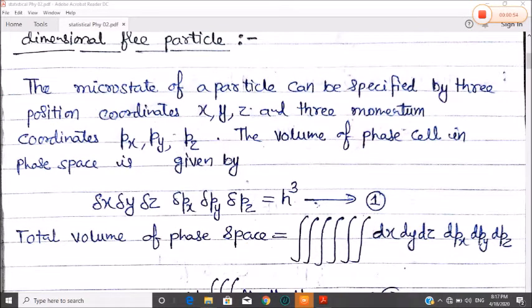We have seen the volume of the phase cell in the phase space is given by the multiplication of all six quantities. We know that each h is equal to the product of position and momentum, which is greater than or equal to h. So if the three quantities combination is equal to x with px, y with py, z with pz, then one quantity is equal to h times h times h cubed.